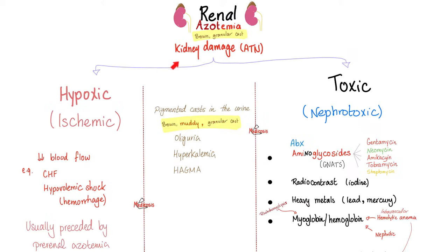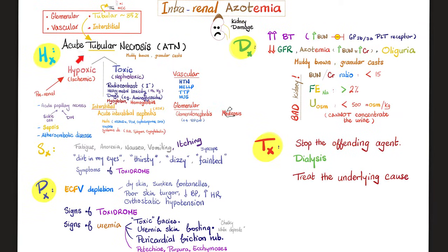What damages the tubules — ischemic or nephrotoxic? Less blood perfusion to the kidney, usually pre-renal azotemia that was not treated promptly and then became intrarenal azotemia. Or it could be toxic: contrast agents, medications, myoglobin, hemoglobin, heavy metals. Other causes include sepsis, acute papillary necrosis from diabetes or sickle cell, atheroembolic disease, hypertension, HELLP syndrome, TTP, and hemolytic uremic syndrome — all of these can lead to acute tubular necrosis.